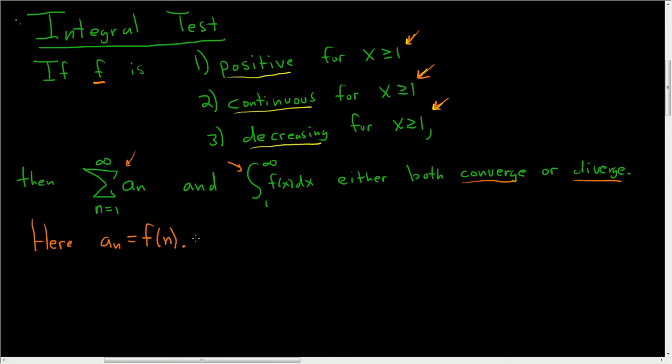Before we do a simple example let me mention that this is a last resort. This is a last resort type method. It's probably the most work, at least in my opinion, out of all the convergence and divergence tests. So you want to try everything else first before you do this.